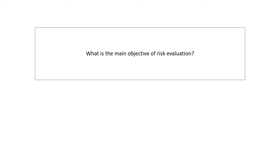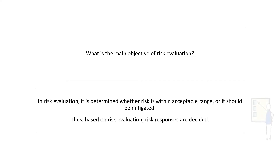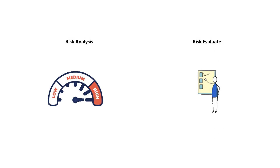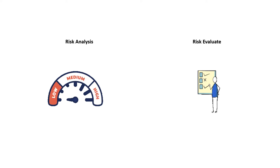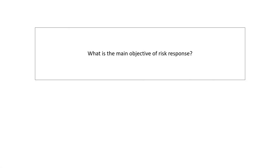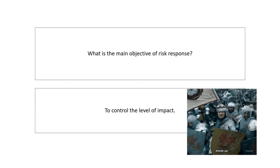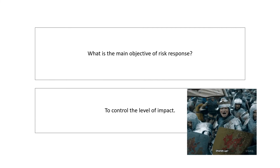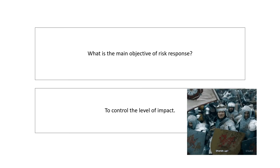Next question: what is the main objective of risk evaluation? The answer should be to determine whether the risk is within an acceptable range or if it should be further mitigated. Based on risk evaluation, risk responses are decided. Please note that risk analysis comes prior to risk evaluation — you can evaluate a risk only if it is analyzed first. The main objective of risk response is to control the level of impact.